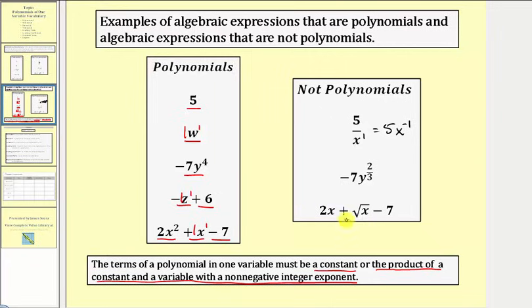In our last expression, the first and the third terms do satisfy the condition for a polynomial, but the second term doesn't, and therefore this is not a polynomial. The square root of x is equal to x raised to the power of one-half, and once again this exponent is not a non-negative integer.